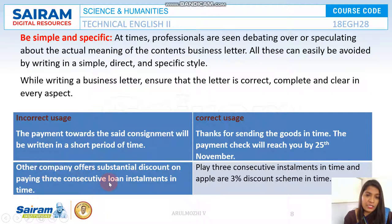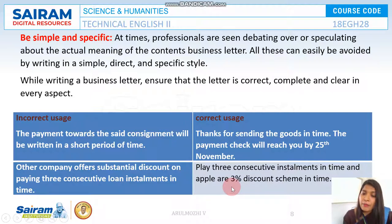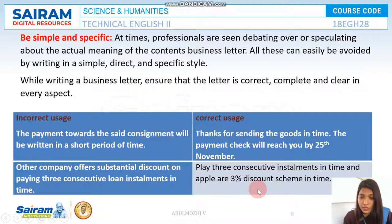Another example: 'Our company offers a substantial discount on paying three consecutive loan installments in time' is not clear. Instead, be specific: 'Pay three consecutive installments in time and avail a three percent discount scheme.'